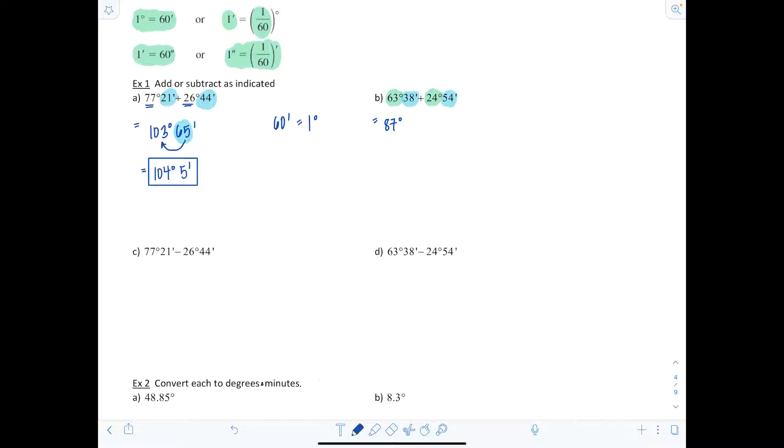Then we have 38 minutes and 54 minutes. If I add those together that gives me 92 minutes. Again, 92 is larger than 60. So I take 92 minutes subtract 60 minutes since that's equal to one degree and I get 32 minutes. Then this one degree gets added on to my 87 degrees, so now we have 88 degrees and 32 minutes.